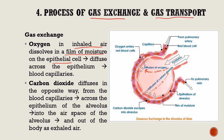Oxygen diffuses into the blood capillaries and moves to the pulmonary vein, where it will enter the heart. Carbon dioxide diffuses in the opposite direction — from the blood capillaries, across the epithelium of the alveolus, and into the airspace of the alveolus, out of the body as exhaled air.